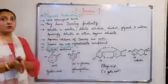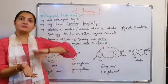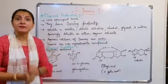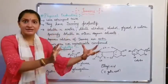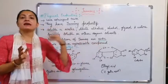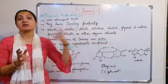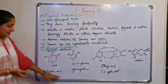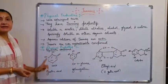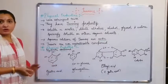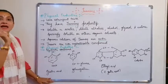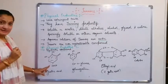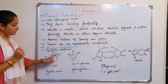Tannins are of two types: hydrolysable tannins and condensed tannins. Hydrolysable tannins include examples like gallic acid and ellagic acid. Condensed tannins include catechin. For gallic acid, you can see that many OH groups are present, so it is an acid ester or acid of phenols — a phenolic compound.